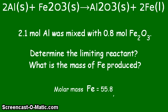For the given reaction, 2.1 mole of aluminum was mixed with 0.8 moles of Fe2O3. Determine the limiting reactant and what is the mass of iron produced. The atomic or molar mass of Fe is 55.8.